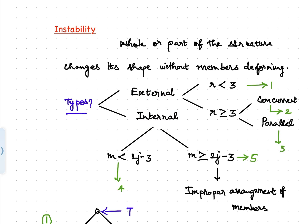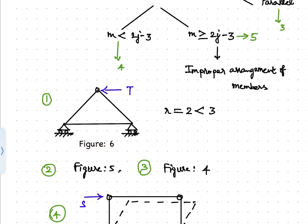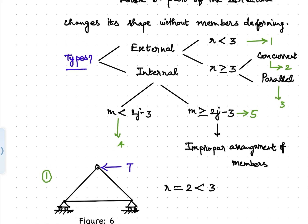External instability is due to support reactions being inadequate or adequate but inappropriately configured. The case where R is less than 3 corresponds to support reactions being inadequate to prevent rigid body translation or rotation. Figure 6 represents a suitable example: the truss is supported only on a pair of rollers, so R equals 2, which is less than 3. A horizontal load T would upset the stability of this truss — this instability arises from too few support reactions.